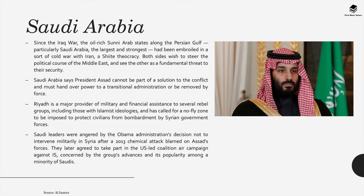Saudi Arabia is another important country against the Assad regime. Since the Iraq war, the oil-rich Sunni Arab states along the Persian Gulf, particularly Saudi Arabia, have been embroiled in a sort of cold war with Iran, a Shiite theocracy. Both sides wish to steer the political course of the Middle East and see each other as a fundamental threat to their security. Saudi Arabia says President Assad cannot be part of the solution to the conflict and must hand over power to a transitional administration or be removed by force.